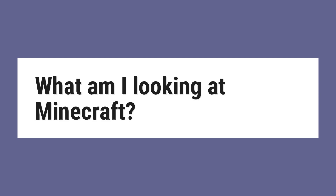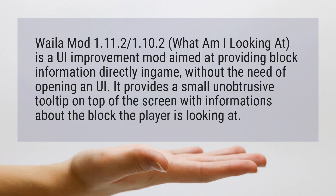What Am I Looking At - Minecraft Waila Mod 1.11.2, 1.10.2. What Am I Looking At is a UI improvement mod aimed at providing block information directly in-game, without the need of opening a UI. It provides a small unobtrusive tooltip on top of the screen with information about the block the player is looking at.